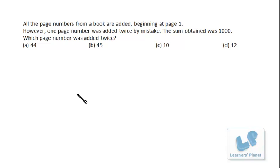Now let's try this interesting question. All the page numbers from a book are added beginning at page 1. However, one page number was added twice by mistake. The sum obtained was 1000. Which page number was added twice? It's quite a simple and interesting problem. The counting is beginning from 1, so the sum of n natural numbers is n(n+1)/2.